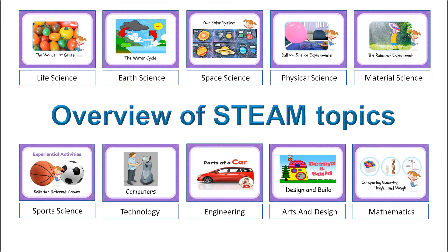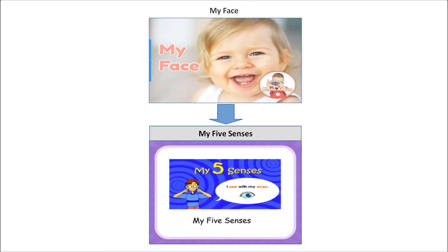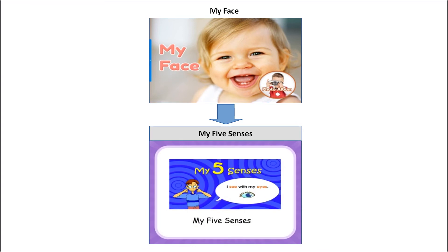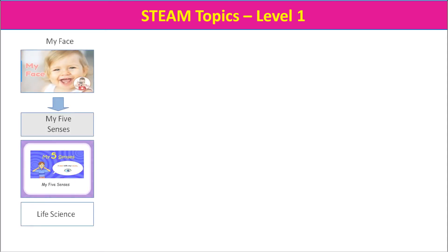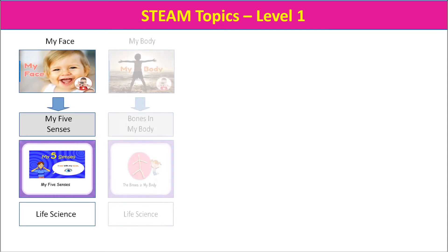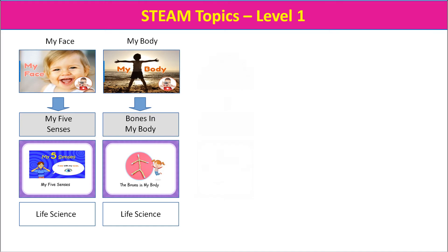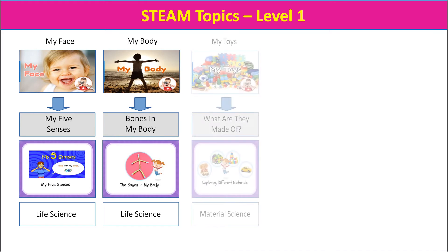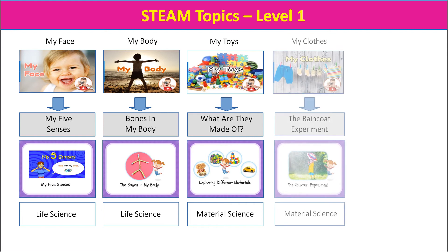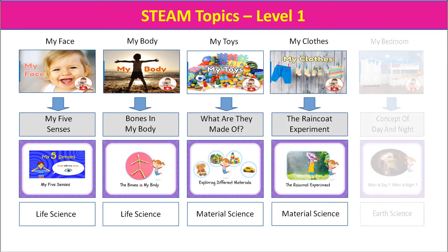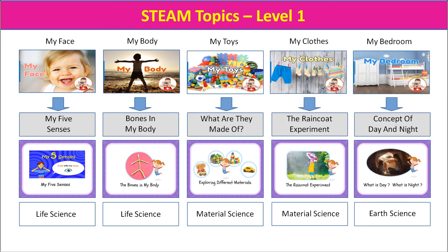An overview of the STEAM topics: The STEAM topics are an extension of the thematic English topics. At Level 1, the STEAM topics include My Five Senses, The Bones in My Body, What Materials Are These Toys Made Of?, The Raincoat Experiment, and Concept of Day and Night.